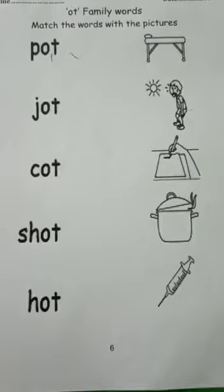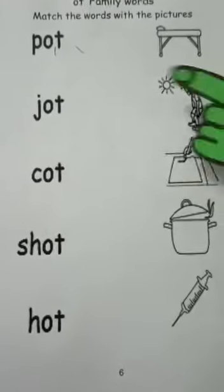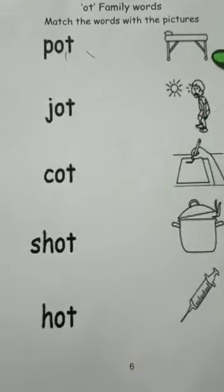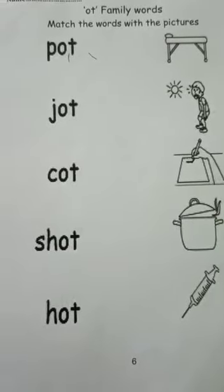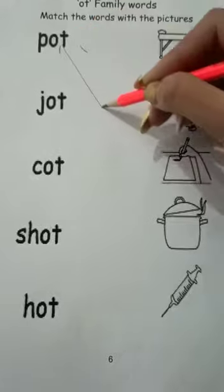We are going to match the words with the pictures. So the first word is Pot. And where is the Pot here? Yes, absolutely right. Pot is here. So let's match Pot.